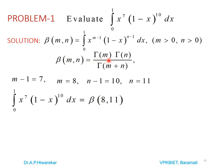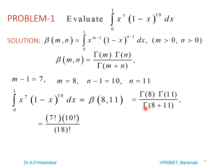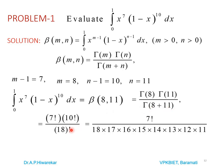Using the Beta-Gamma relation Beta(m,n) = Gamma(m)·Gamma(n)/Gamma(m+n), Beta(8,12) = Gamma(8)·Gamma(12)/Gamma(19). Since Gamma(n) = (n−1)! for natural numbers, Gamma(8) = 7!, Gamma(12) = 11!, and Gamma(19) = 18!. Simplifying: 7!·11!/18! = 7!·11! / (18·17·16·15·14·13·12·11!). The 11! cancels, and further simplification gives the final answer.